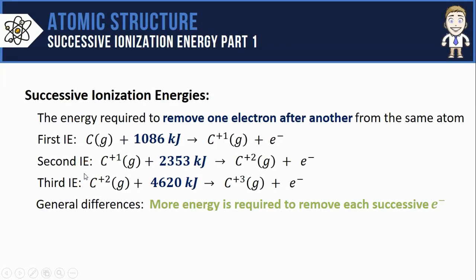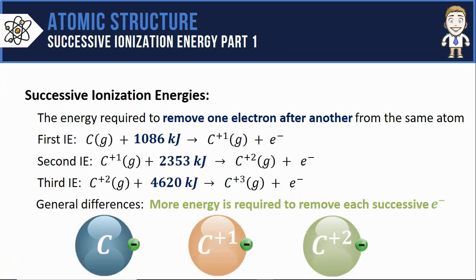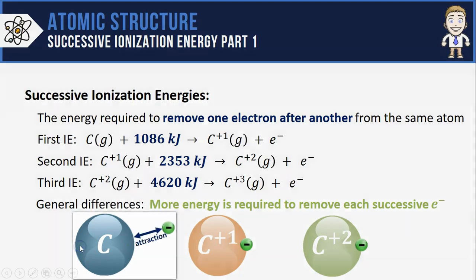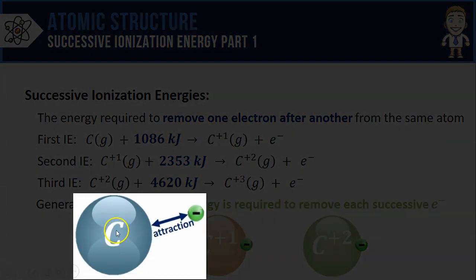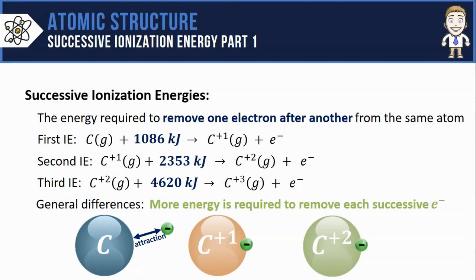We can explain why that is by looking at the three models shown below. The removal of the first electron, which we'll show here on the blue atom, is the easiest one to do. It takes the least amount of energy. That's because this electron is attracted to the positive nucleus of the carbon, so it takes some small amount of energy to break it free from that attraction.